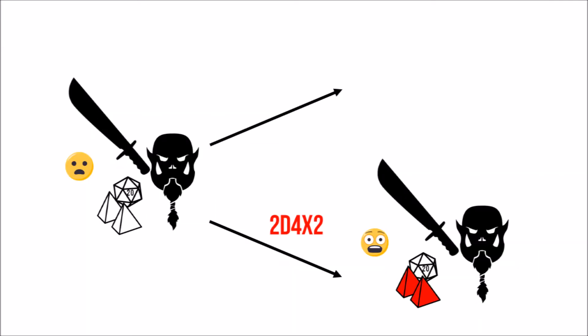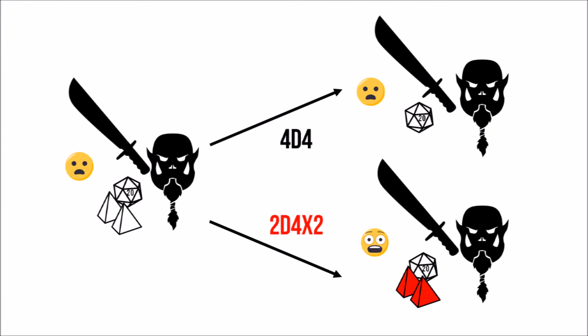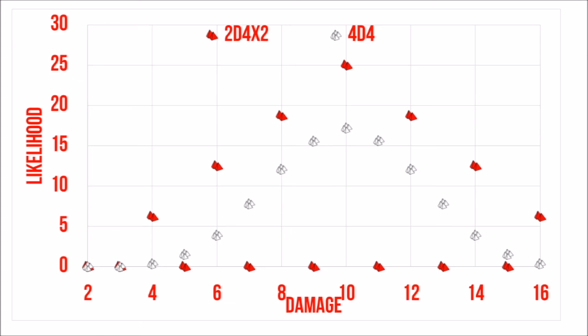On the other hand, if we follow rules as written, we would double the number of dice and roll 4d4, which produces a histogram with the same range of damage but a more concentrated peak, making it more consistent.